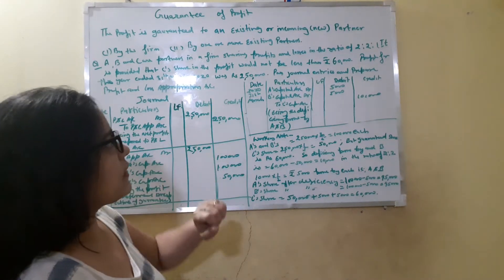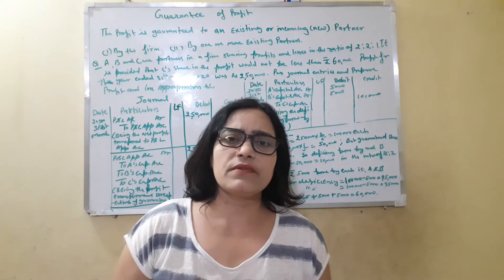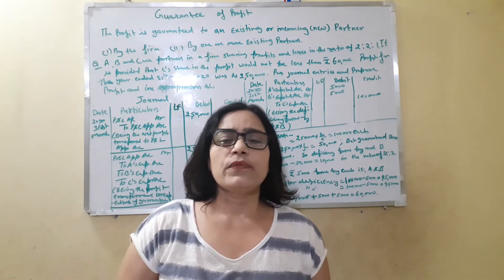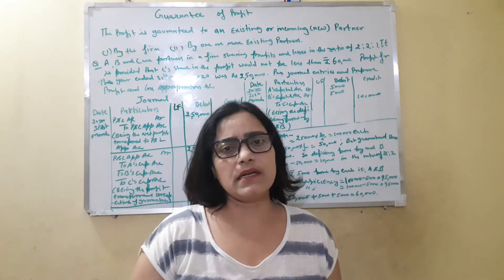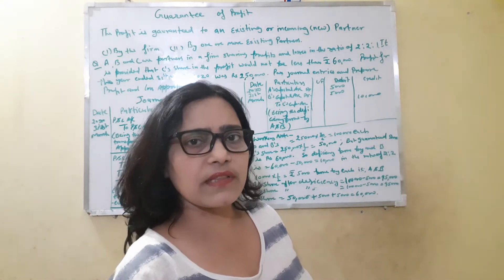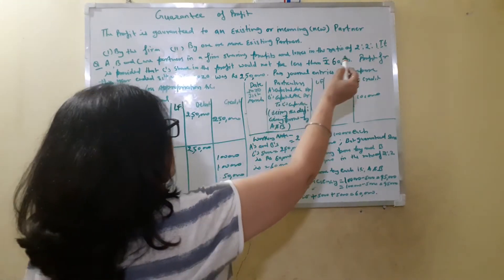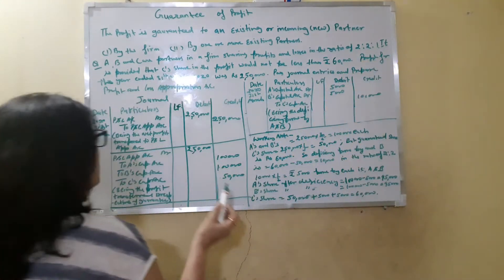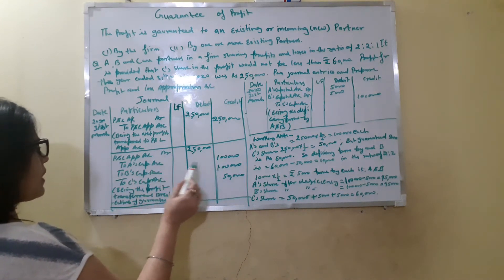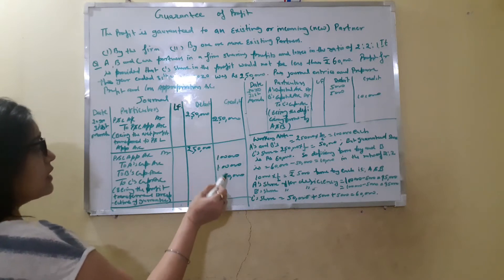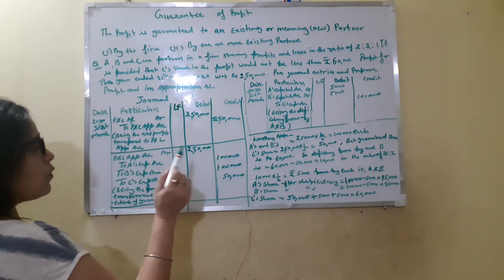Now we will distribute this profit in the ratio of 2:2:1, irrespective of the guarantee — meaning we will not consider the guaranteed amount for C at this stage. So we will do the entry distributing the profit in the ratio of 2:2:1: Profit and Loss Appropriation Account debit to A's Capital Account, B's Capital Account, and C's Capital Account. This is the profit sharing entry.